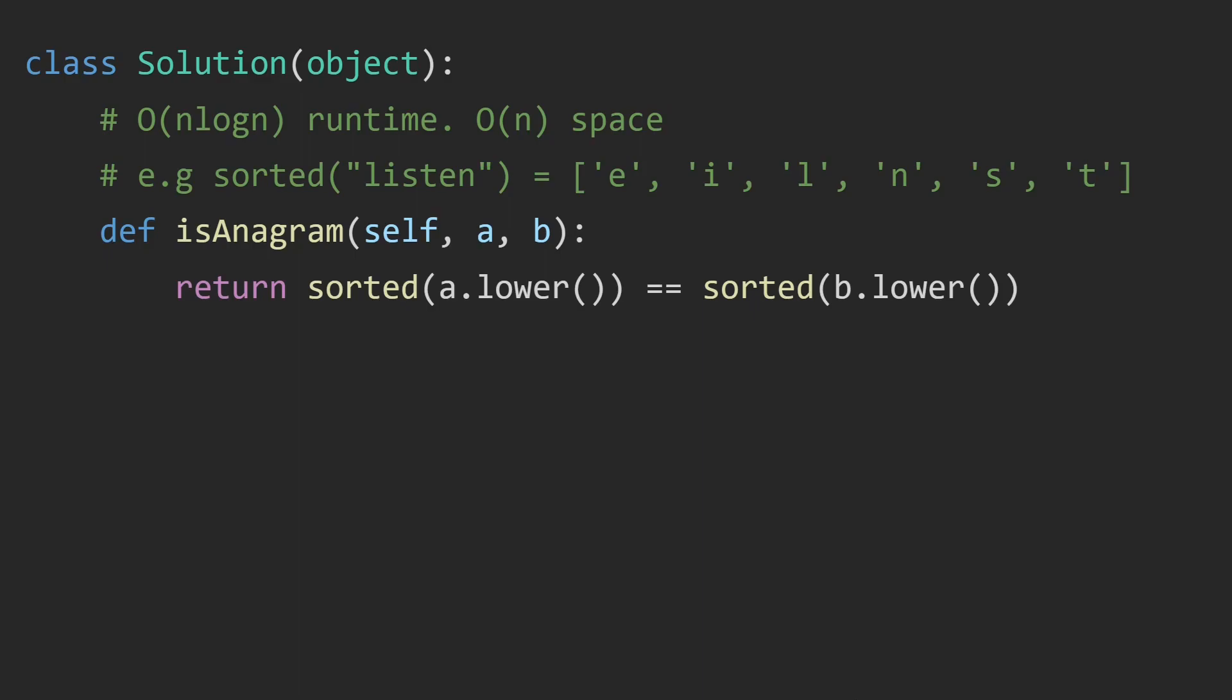Here is the code in Python. We take in strings A and B, lowercase them with the lower function, then sort them, and then compare the results. If they are the same, return true. If not, we return false.